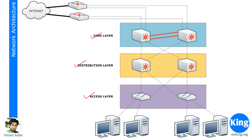Typically these access layer switches will not be connected to each other, because if you start connecting each of those devices to another switch, you would have a huge mess and it is going to be a wiring hell. So what would typically be done is we would have another layer called the distribution layer, with slightly more high-powered devices which could also do Layer 3.